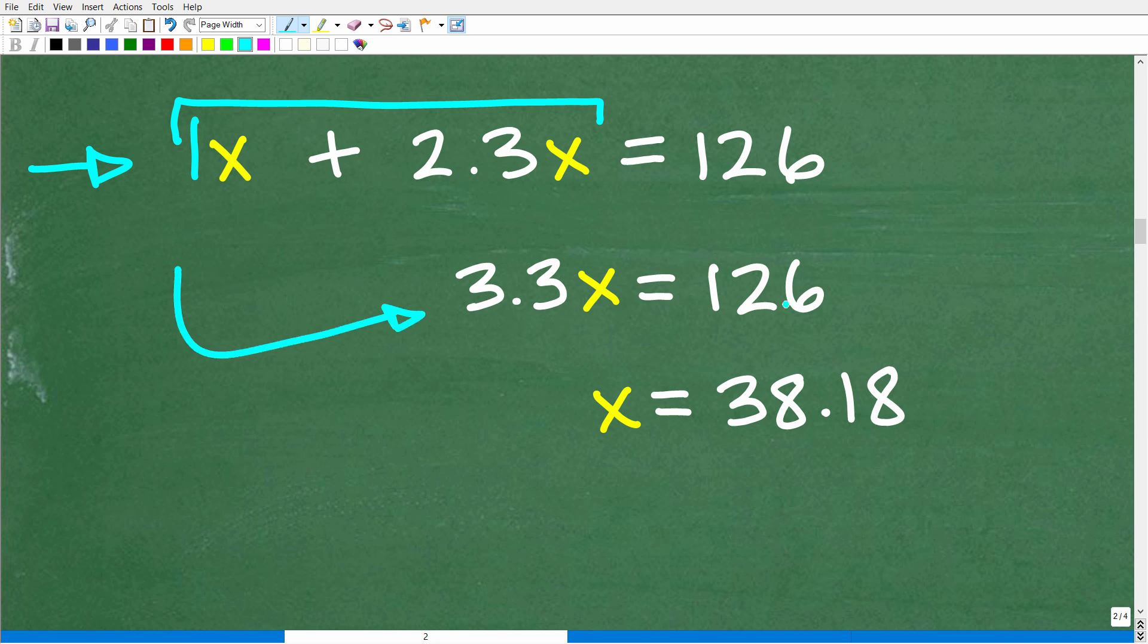Okay, so we have 3.3x is equal to 126. So to solve for x, all we have to do is divide both sides of the equation by 3.3. So we have 126 divided by 3.3 and we're going to get approximately 38.18. Okay, so this is what x is equal to, but we're not done right here.